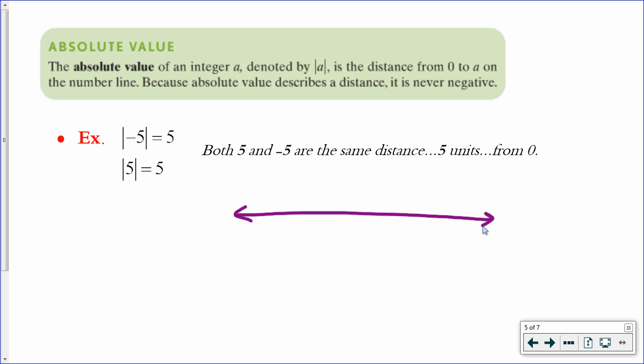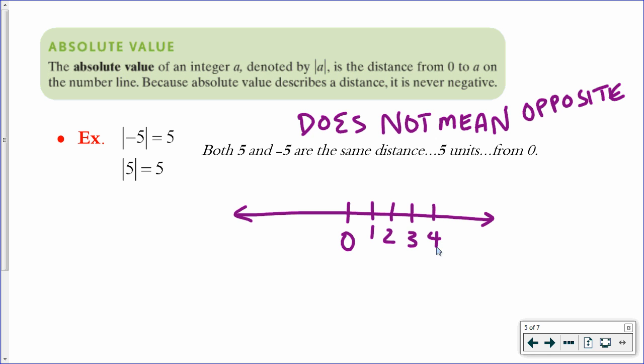So, absolute value does not mean opposite, right? Does not mean opposite. Opposite, right? A positive would become negative, a negative would become positive. That's not what absolute value does. Absolute value takes anything, no matter which side of 0 it's on, and simply counts how many spaces: 1, 2, 3, 4, 5.